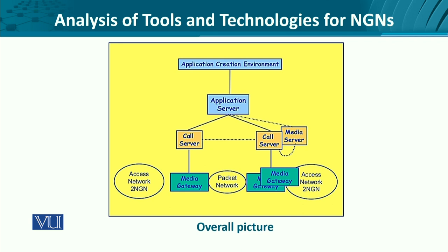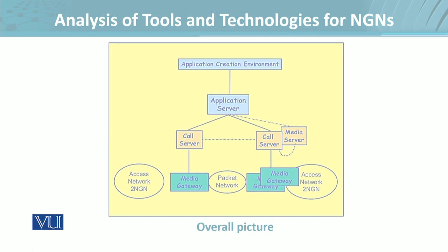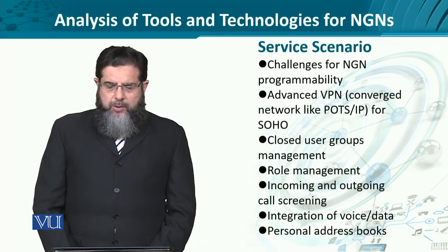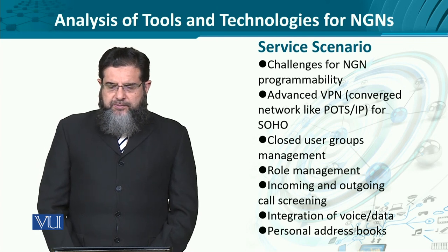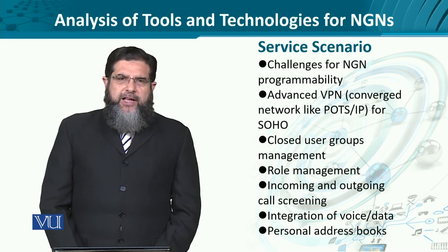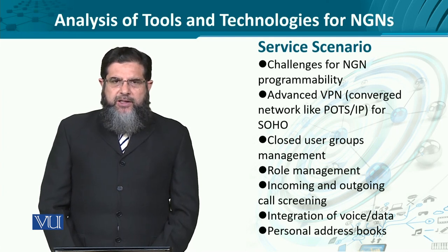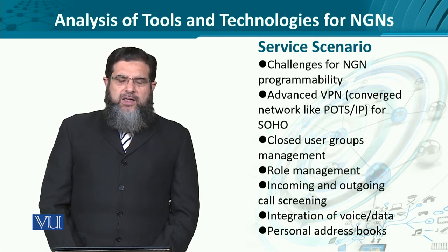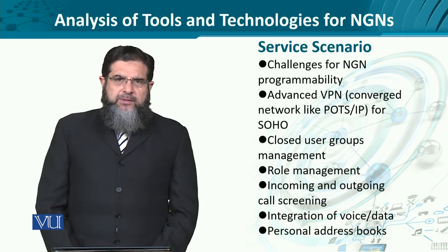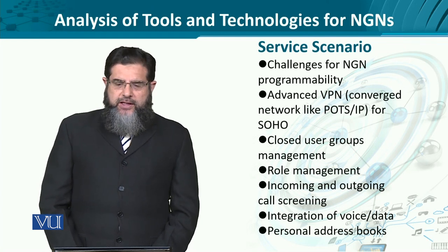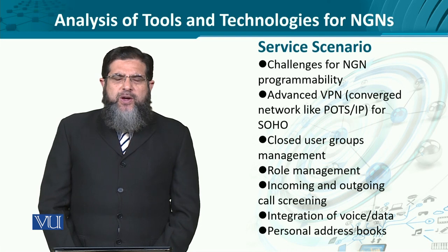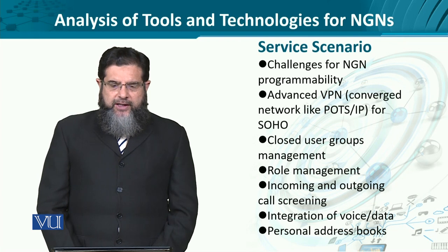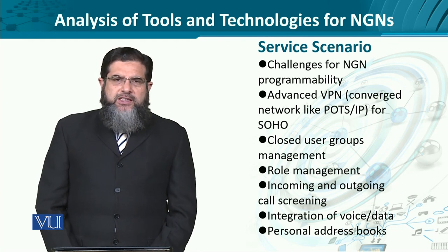That is something we will discuss in subsequent modules as well. If you look at a certain service scenario — let's take an example of a virtual private network on a plain old telephone system on one end and IP on the other end for a small business — we have a central office and remote offices, also known as SOHOs. These are the possible challenges that we would have to solve, and we need to provide the right tools and technologies for NGNs.